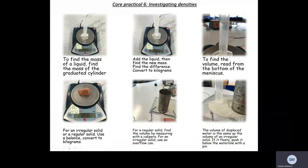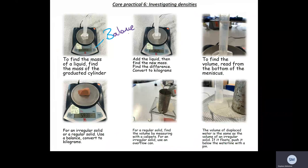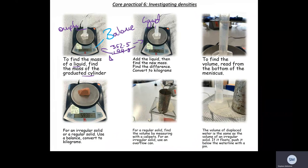We're investigating densities — finding the density of a regular solid and a liquid. To find the mass of anything, use a balance (not a scale — a balance). To find the mass of a liquid, first find the mass of the empty graduated cylinder, then add the liquid and find the new mass. The difference is the mass of the liquid. For example: 352.5 grams with the liquid minus 199.8 grams without gives the mass of the liquid. Convert to kilograms by dividing by 1,000.